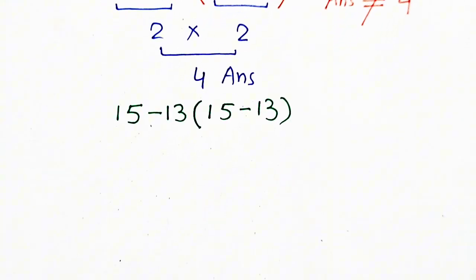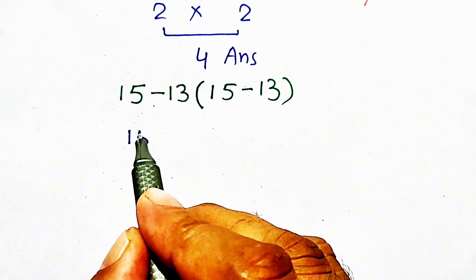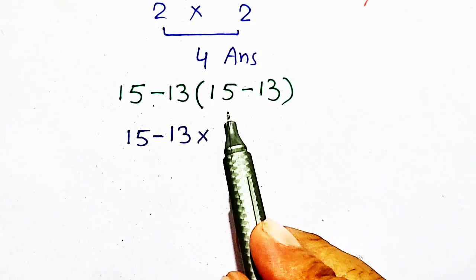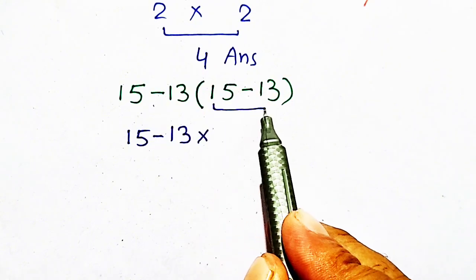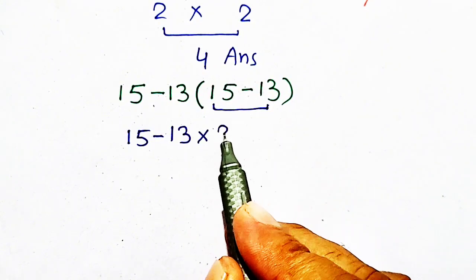Now, I will solve it again. 15 minus 13 as it is, times, first of all, parentheses should be solved. 15 minus 13 will be equal to 2.